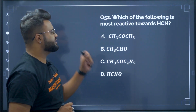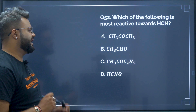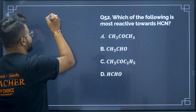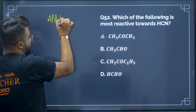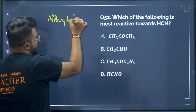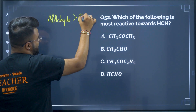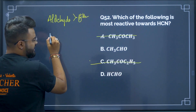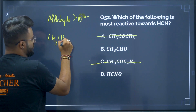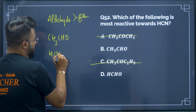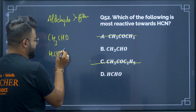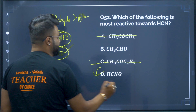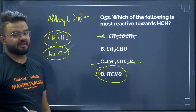Question number 52: which of the following is most reactive towards hydrogen cyanide? The most reactive will be aldehydes first, then ketones. Among these, the aldehydes are CH3CHO and HCHO (methanal). The most reactive aldehyde is methanal (HCHO), so option D will be your correct answer.